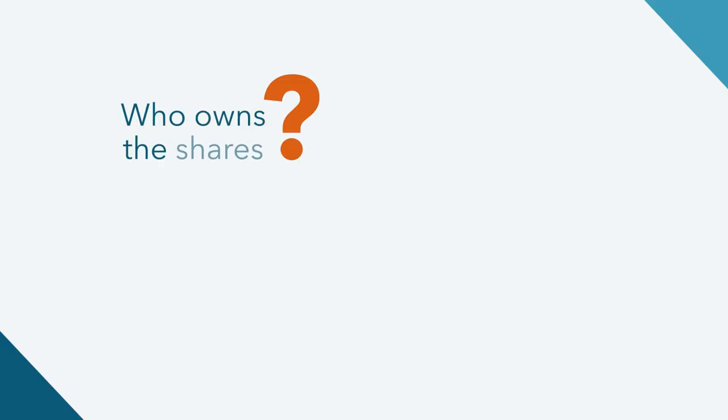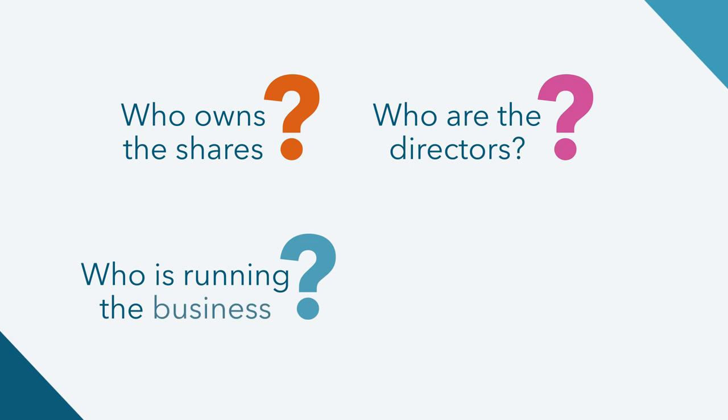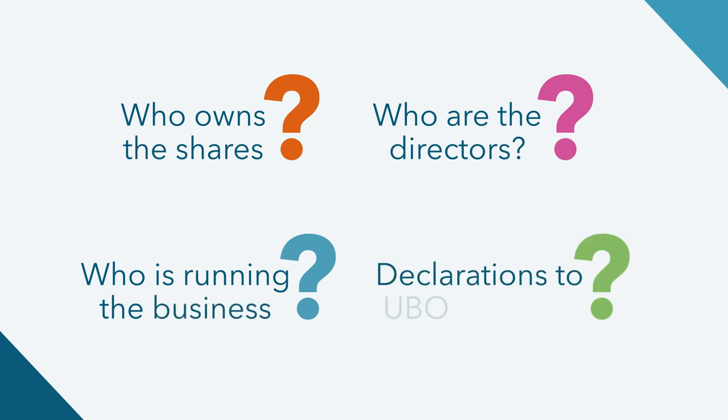For instance, in the US, FinCEN talks about following both a control prong as well as an ownership prong. There are also now multiple sources of information to draw upon — not just who owns the shares, but who the directors are, who's running the business, and declarations made to UBO registers as mandated by the fourth and fifth EU money laundering directives.